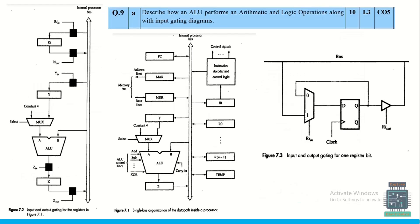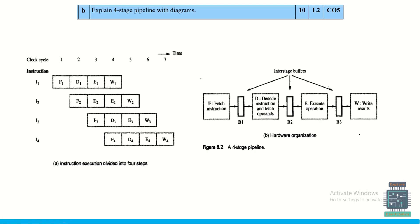To describe how an ALU performs arithmetic and logical operations with an input gating diagram: the input and output gating for registers is given, showing single bus organization of the data path inside a processor. This illustrates how the ALU gets and provides data from different registers, along with the input/output gating for one such register.